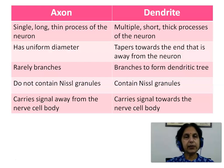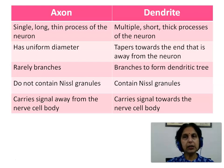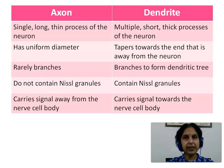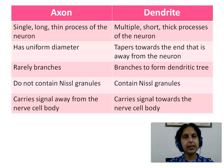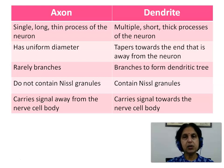The axon is a single long thin process while dendrites are multiple short thick processes of the neuron. The axon has uniform diameter while dendrites taper towards the end away from the neuron. The axon rarely branches while dendrites branch to form the dendritic tree. Axons do not contain Nissl granules while dendrites do. The axon carries signals away from the nerve cell body while dendrites carry signals towards it.